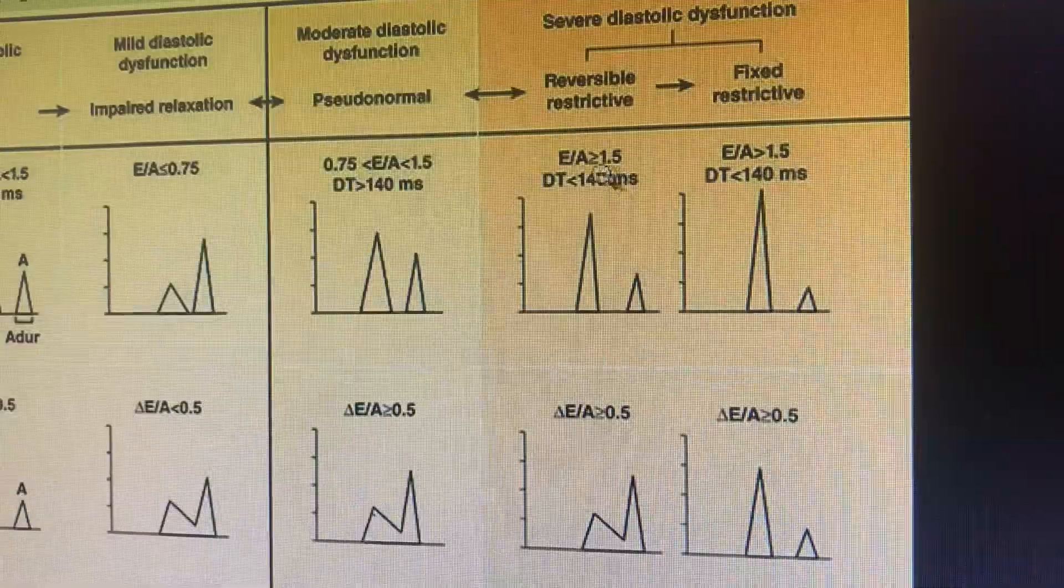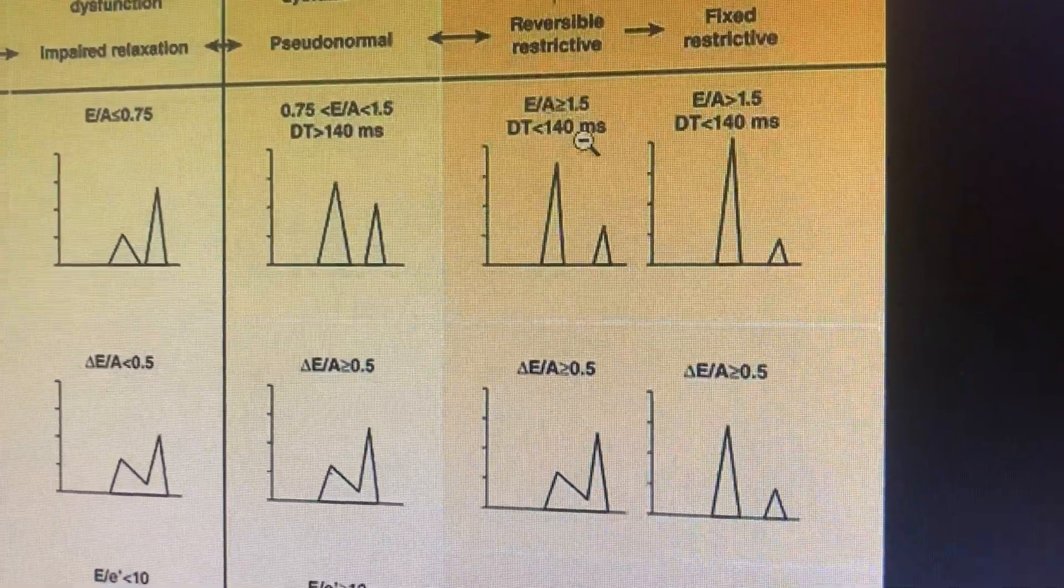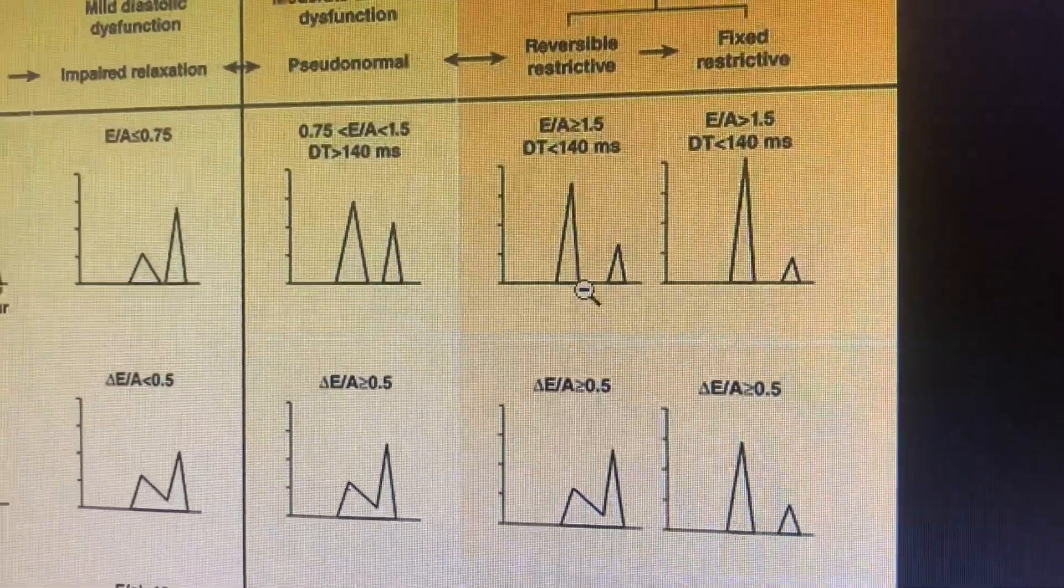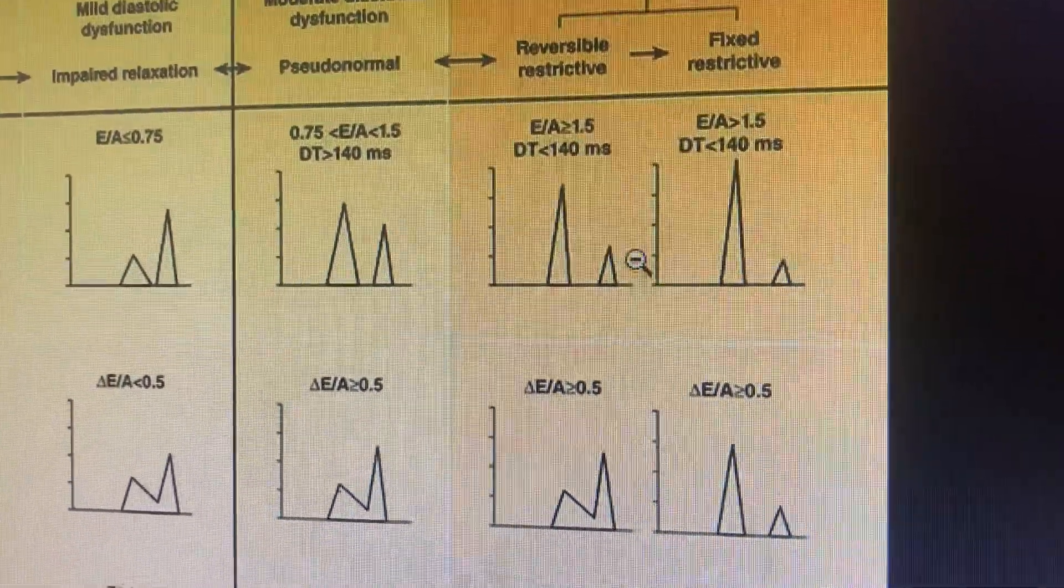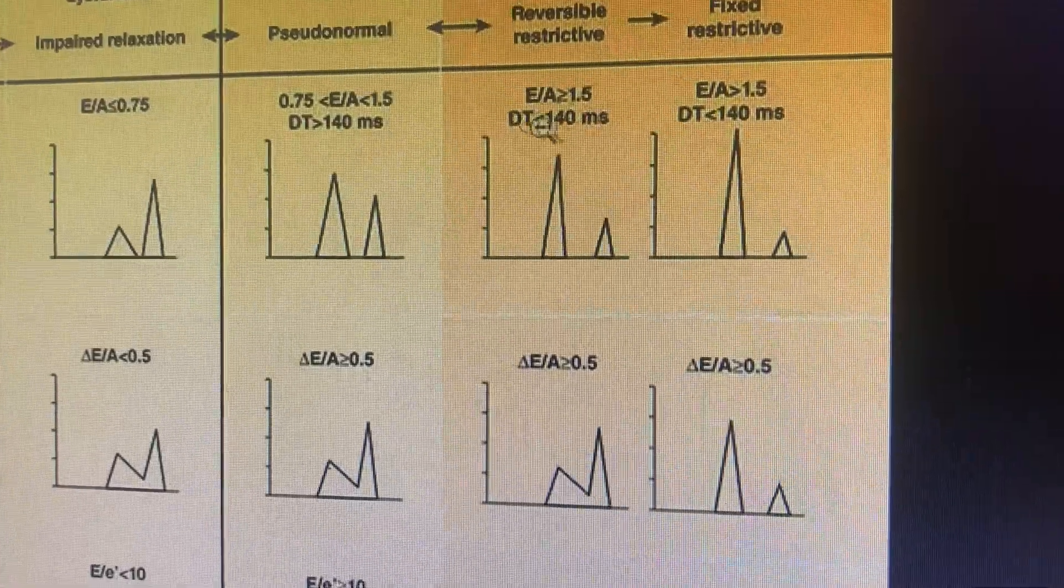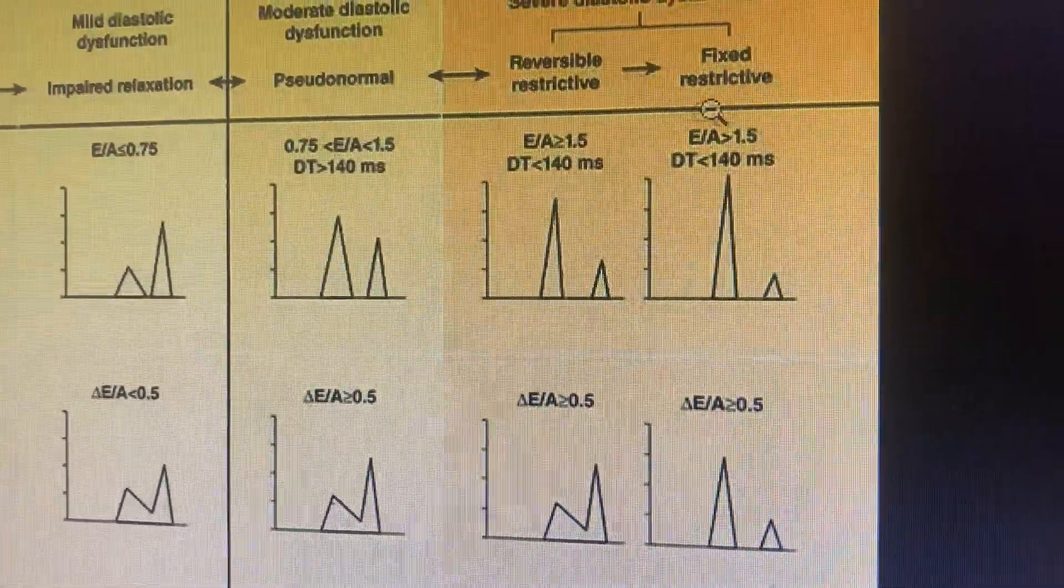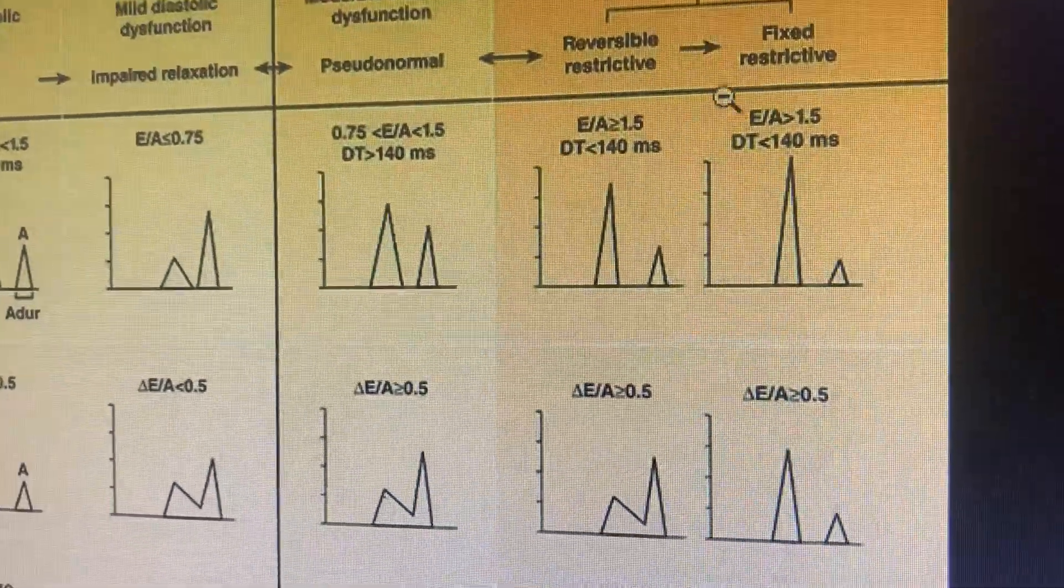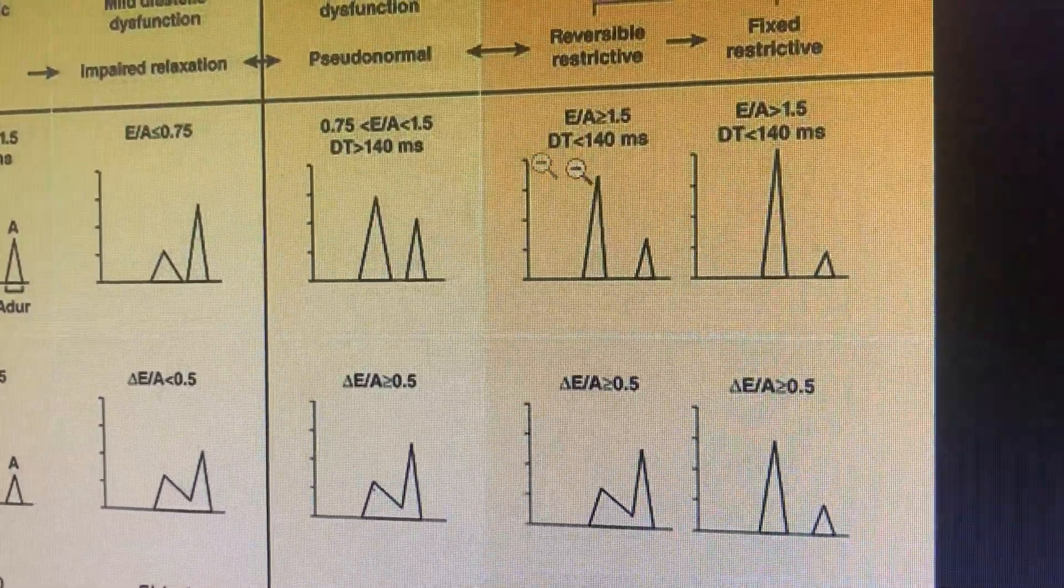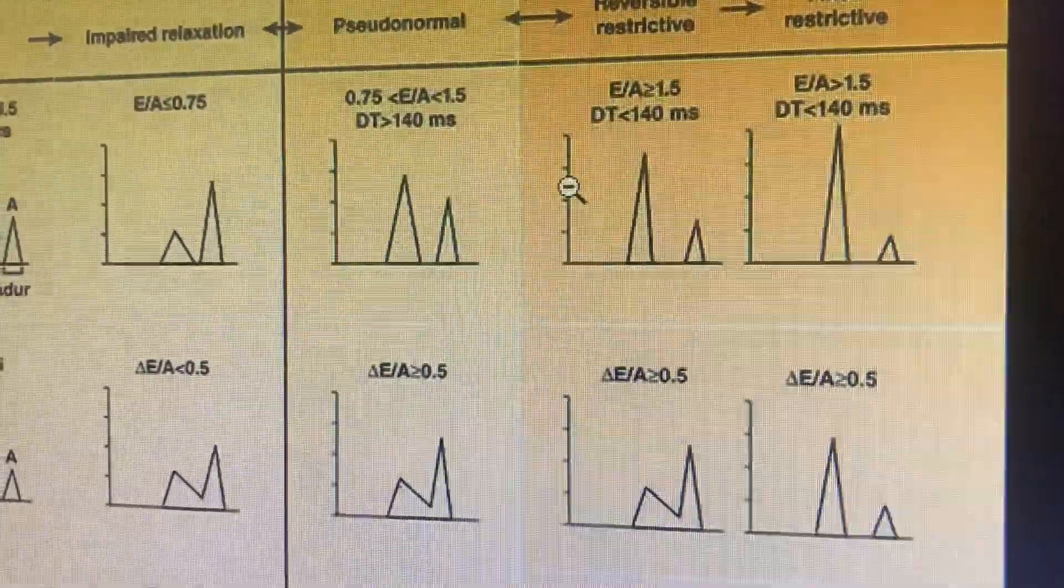In the restrictive mode, the E/A ratio is more than 1.5 - very important. E becomes more upright than the A, it is more than 1.5 times the A, and the deceleration time becomes less than 140 milliseconds. In fixed restrictive, with normal breathing, both will be the same: E/A will be more than 1.5 and the deceleration time will be less than 140 milliseconds.